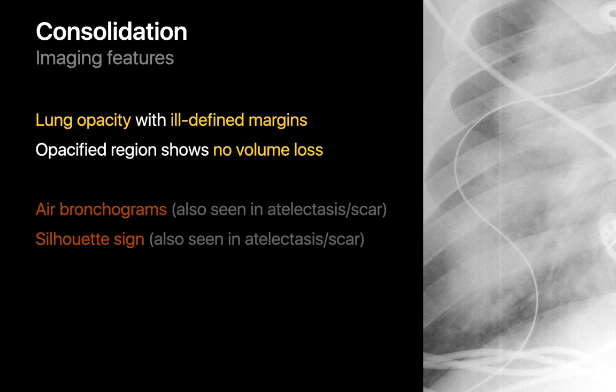Air bronchograms, where air-filled bronchi appear as dark tubular structures against a background of opaque whitish lung, and the silhouette sign, where opaque lung tissue of similar density to the heart and mediastinum makes normal cardiomediastinal borders focally indistinguishable, are features you may encounter with consolidation, but they're nonspecific since they also may occur in the setting of atelectasis or scar.